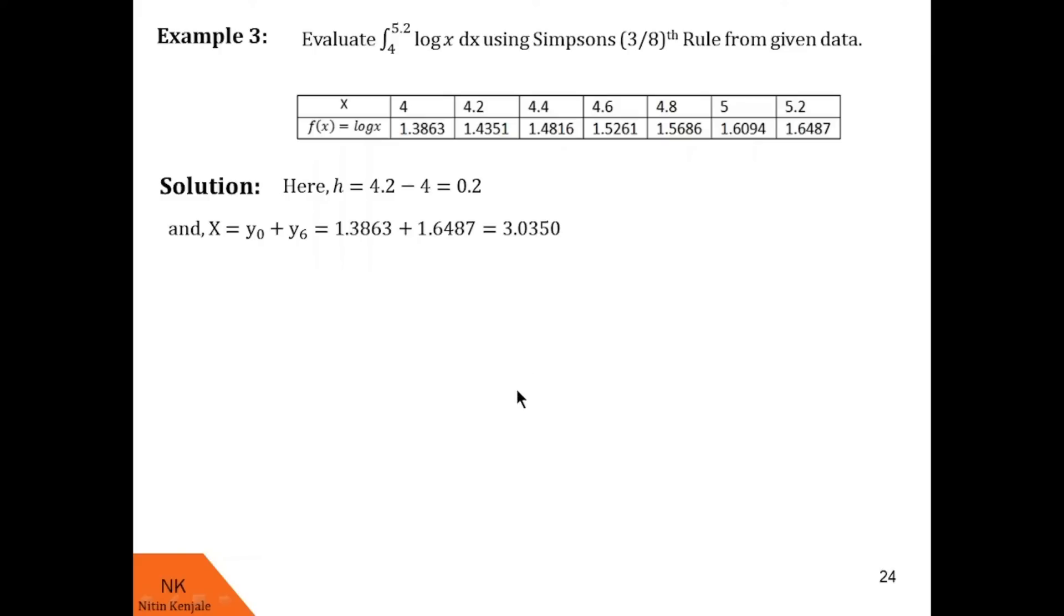Now let us calculate capital T. Capital T is sum of ordinates which are multiples of 3. Here I see the ordinates which are multiples of 3 are y3 only because y6 is already taken in capital X. So capital T consists of only y3 which is 1.5261. Now let us calculate capital R, that is sum of remaining ordinates. Here sum of remaining ordinates is y1 plus y2 plus y4 plus y5. So here we found R as 6.0947.